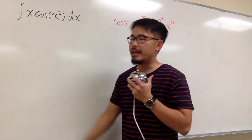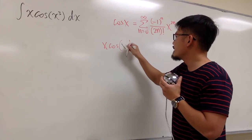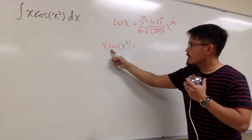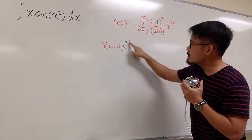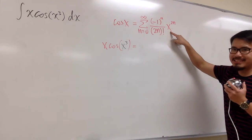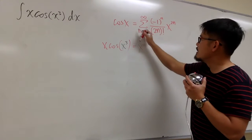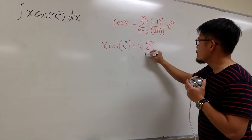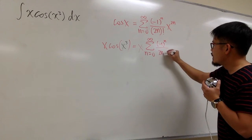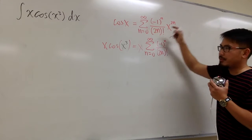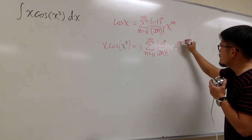Now we are going to come up with an infinite series for x times cosine of x to the 3rd power. We need the infinite series for cosine of x to the 3rd power, but this is easy because we can just plug x to the 3rd power in place of x. So we maintain the x in the front, and then for the cosine part we write the sigma notation where n goes from 0 to infinity, with negative 1 to the nth power over (2n)!, and the x becomes x to the 3rd power, raised to the 2n power.